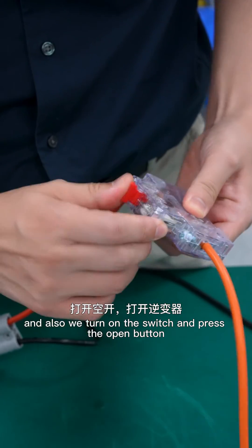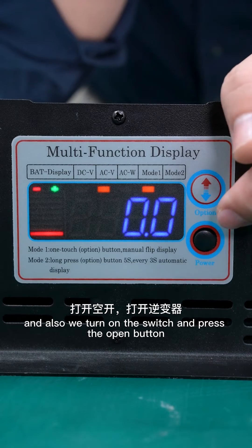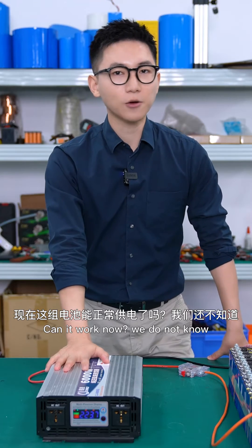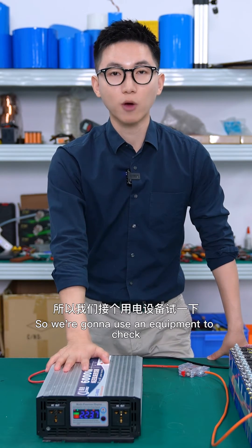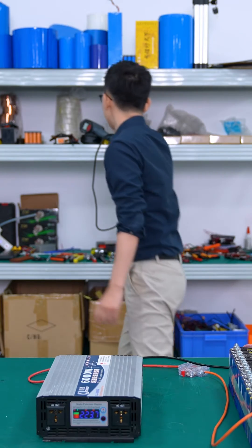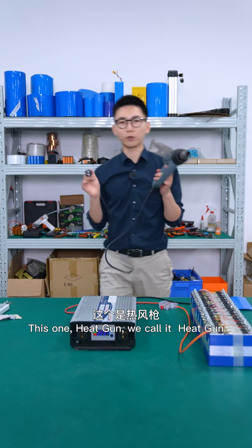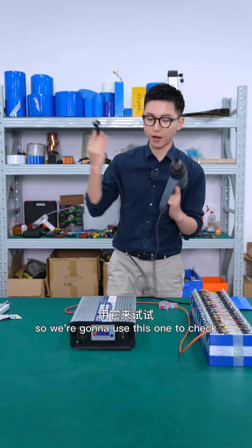Clutching the charger. And also we turn on the switch and press the open button. Can it work now? We do not know, so we're going to use the equipment to check. This one, heat gun, we call it heat gun. So we're going to use this one to check.